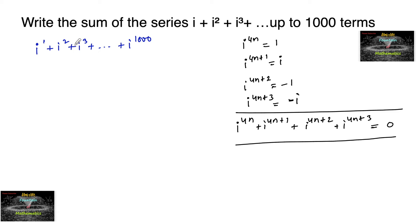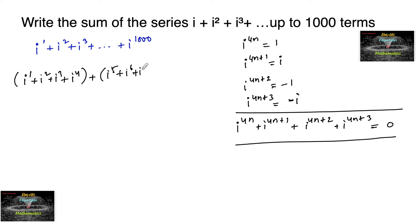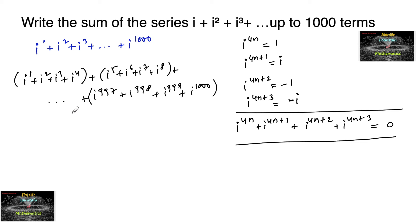Here, i to the power of 1, 2, 3, and so on up to thousand are consecutive, and thousand is divisible by 4. So we can group them: i¹ + i² + i³ + i⁴ as one set, then i⁵ + i⁶ + i⁷ + i⁸, and so on, all the way up to i⁹⁹⁷ + i⁹⁹⁸ + i⁹⁹⁹ + i^1000.